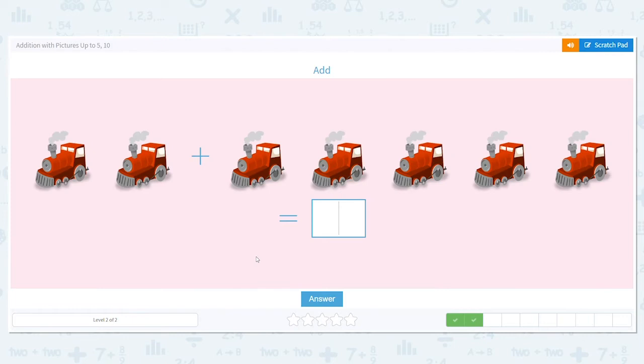Okay, next one. We have trains. We have two trains here. And we have 5 trains here. So we're doing 2 plus 5. Let's count it up.